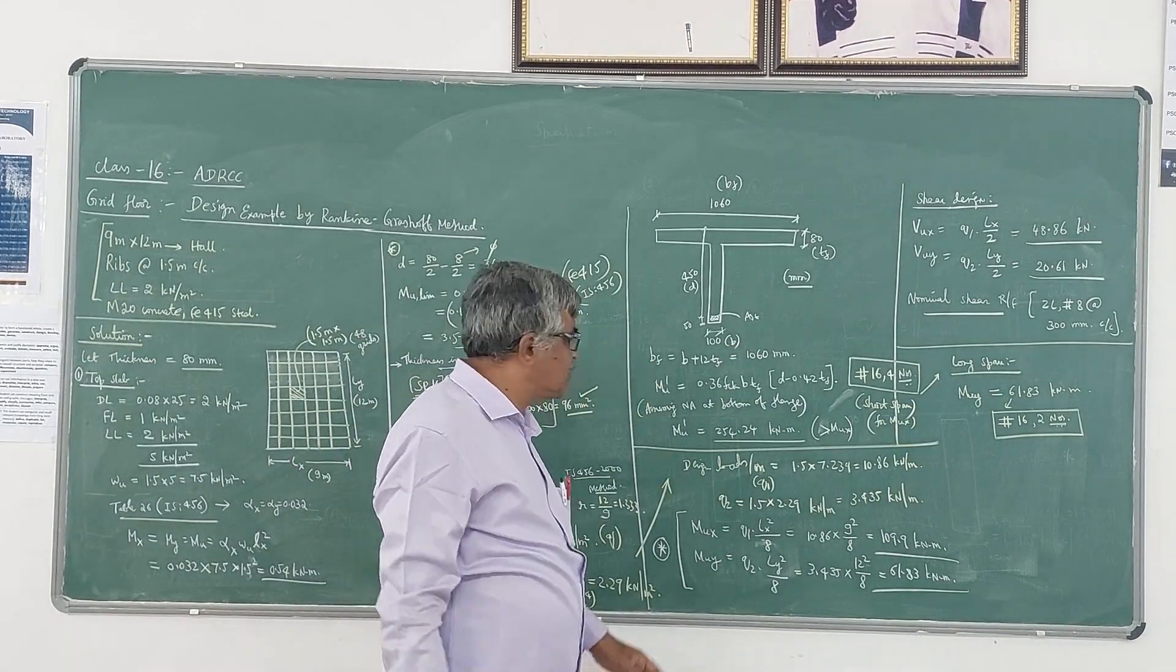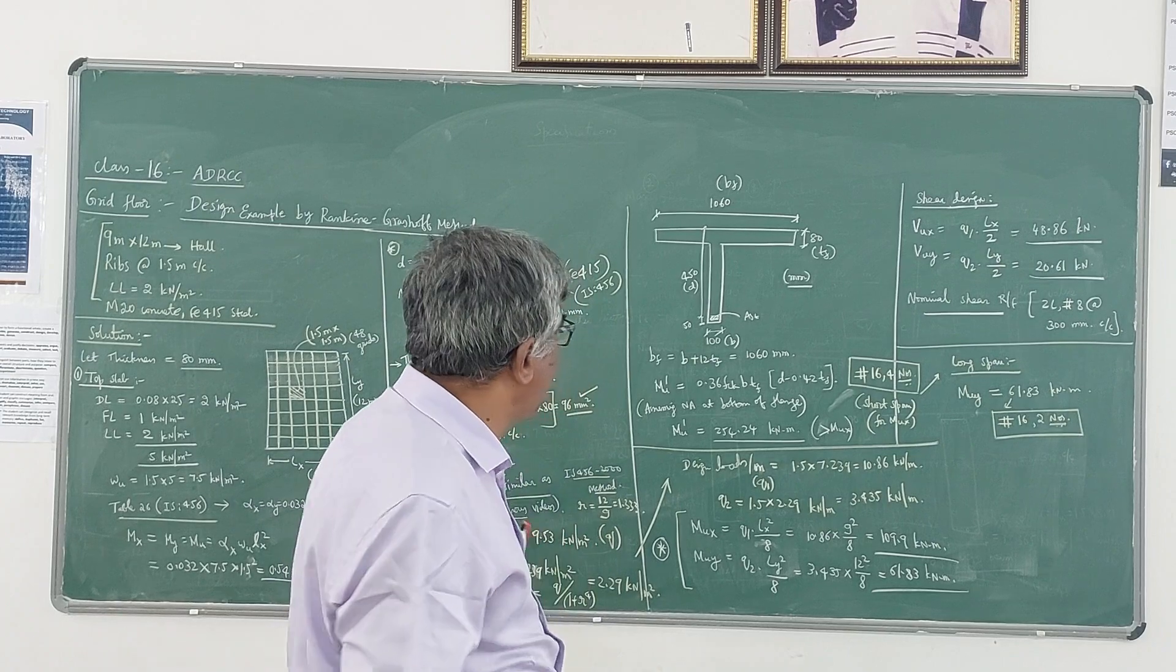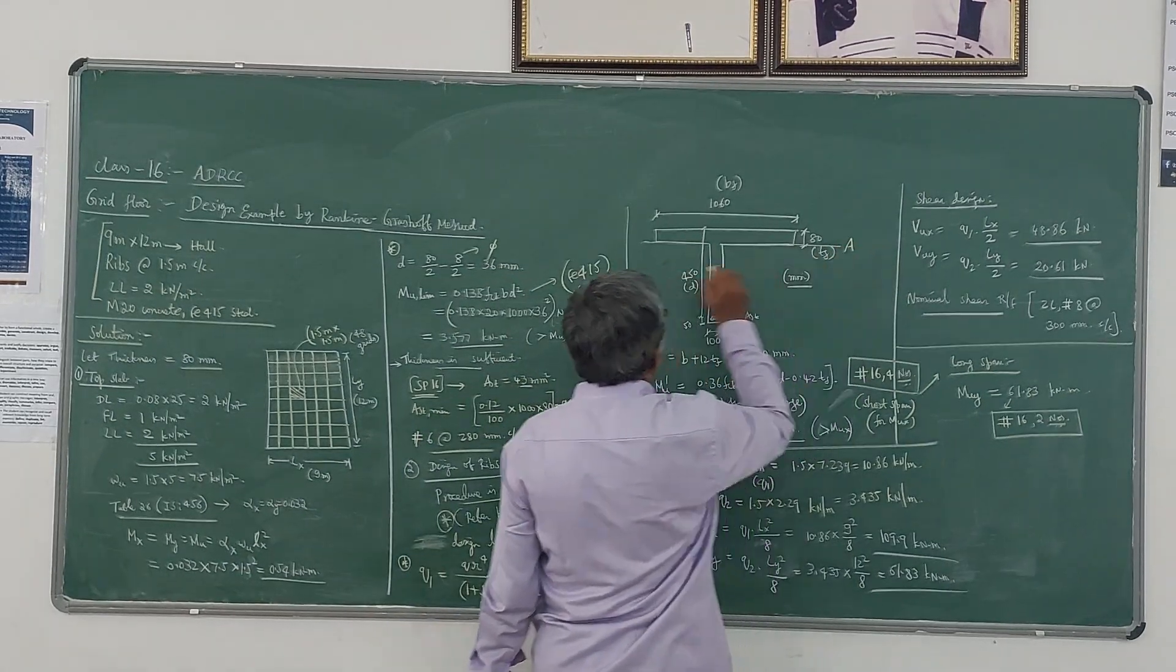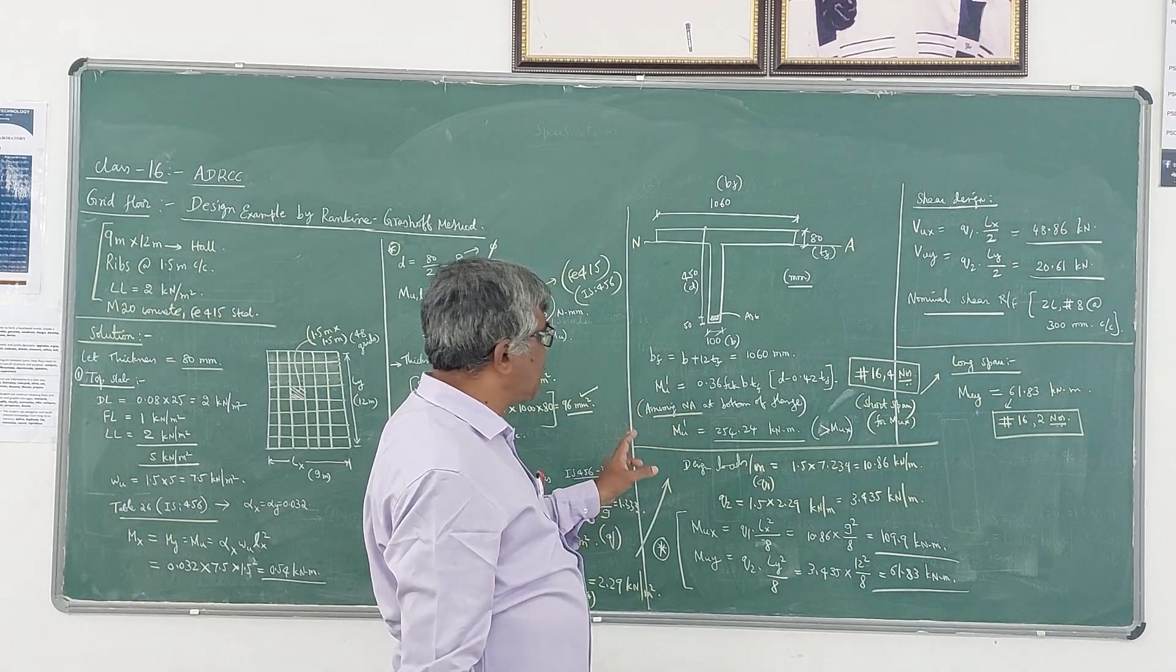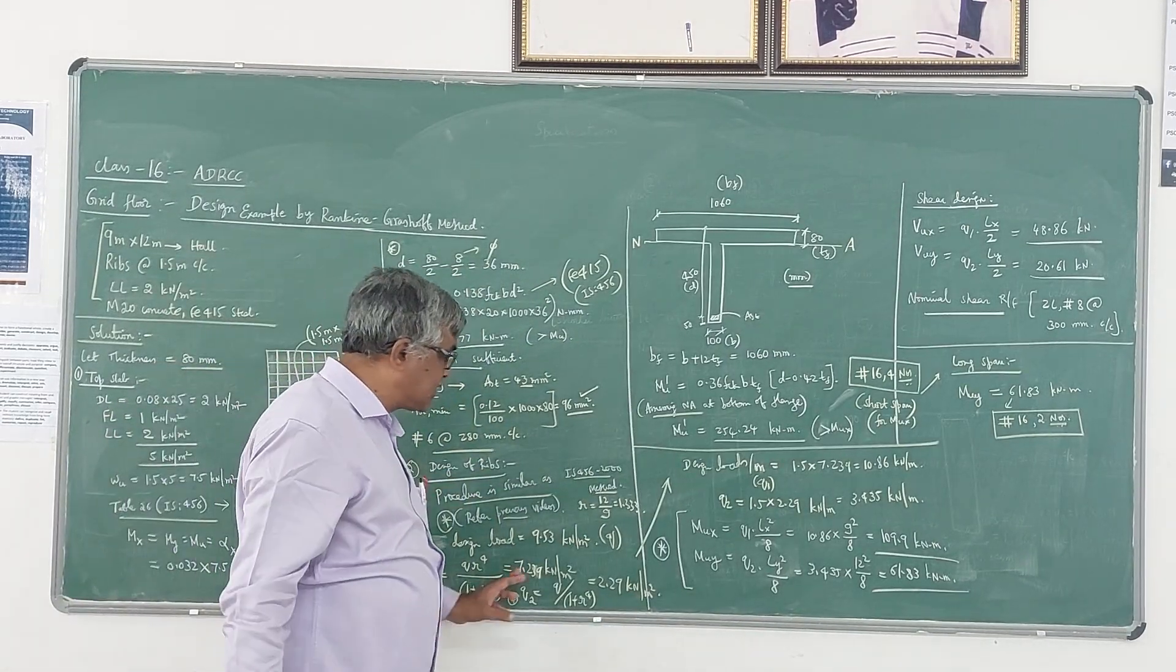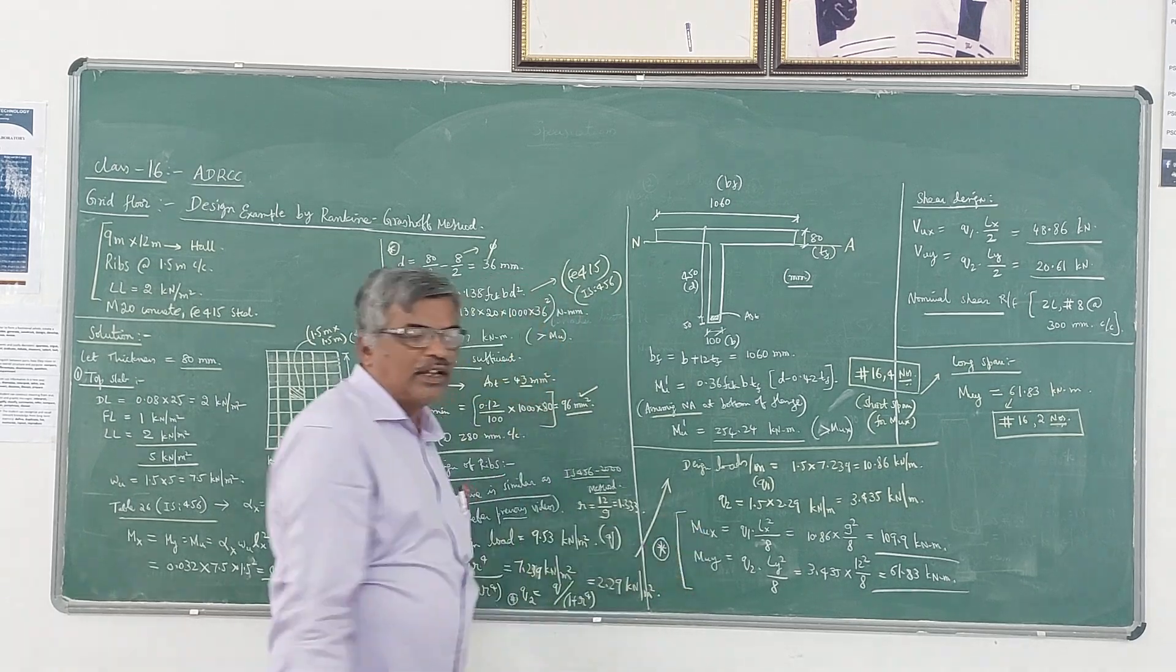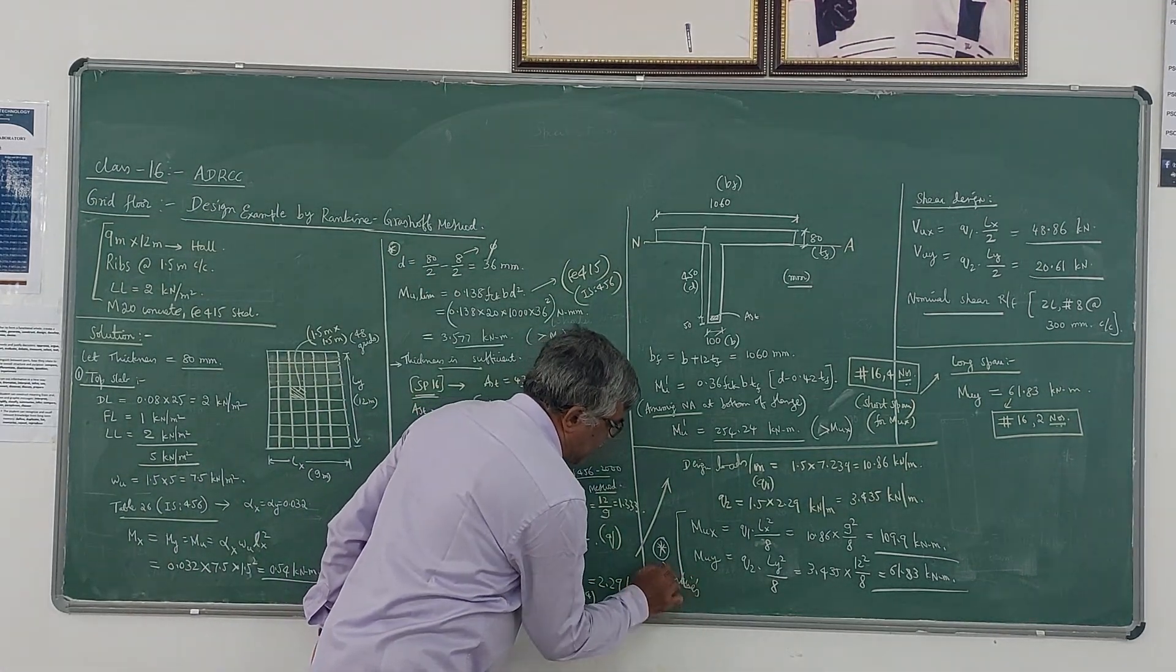Once again you have to calculate the moment of resistance, I call it as Mu2 dash. This formula is available for the T-beam section. The moment of resistance formula is taken from the IS456 code, assuming neutral axis at the bottom of the flange - same procedure as in the IS method. This is the corresponding expression for the moment of resistance. If you substitute and simplify, you get 254.24. For the design loads you calculated, for those Q1 and Q2 values, we calculate the design moments MUX and MUY. This is Rankine's method - you have to use these two formulas to calculate the design moments.